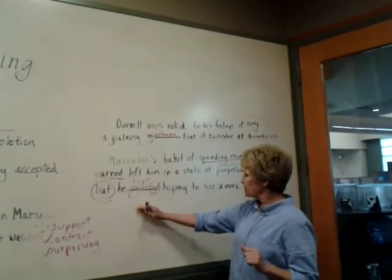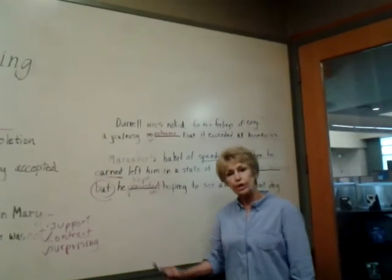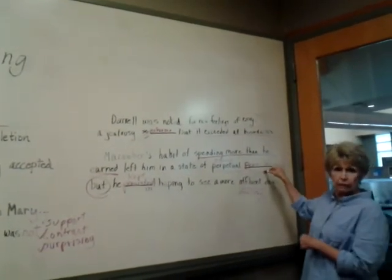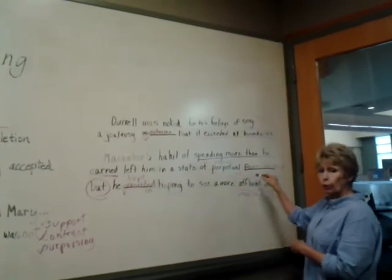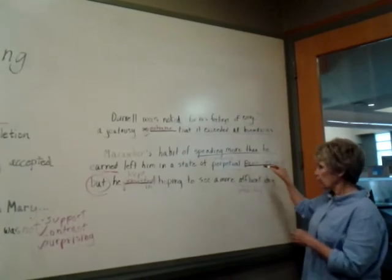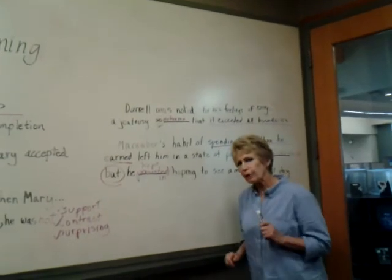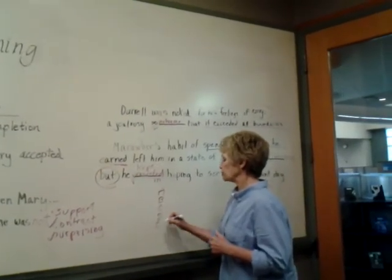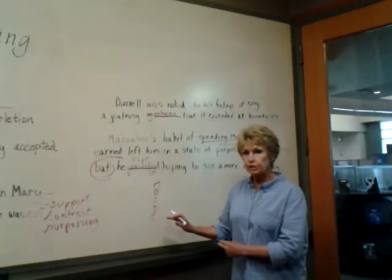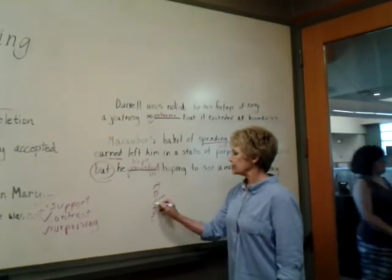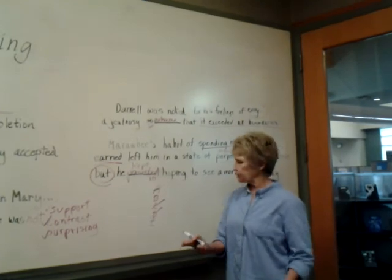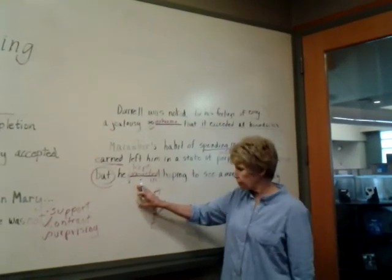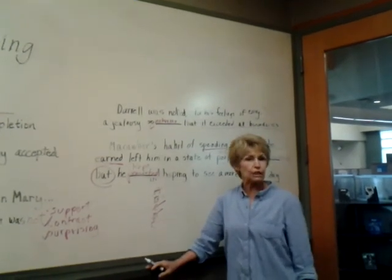Now our strategy changes just a little bit. I'm going to look at my two blanks and decide which one I'm more confident about. In this case, I think number one — pennilessness — is where we're heading: a state of perpetual poverty. So I'm going to look at the five answer choices. I'm not looking for the right answer though; I'm looking to eliminate wrong answers. If choices A, C, and D have nothing to do with poverty, we get rid of those. Now we only have two choices left, and when I look at my second blank, I only have to decide which of those two is closer to what I was thinking.